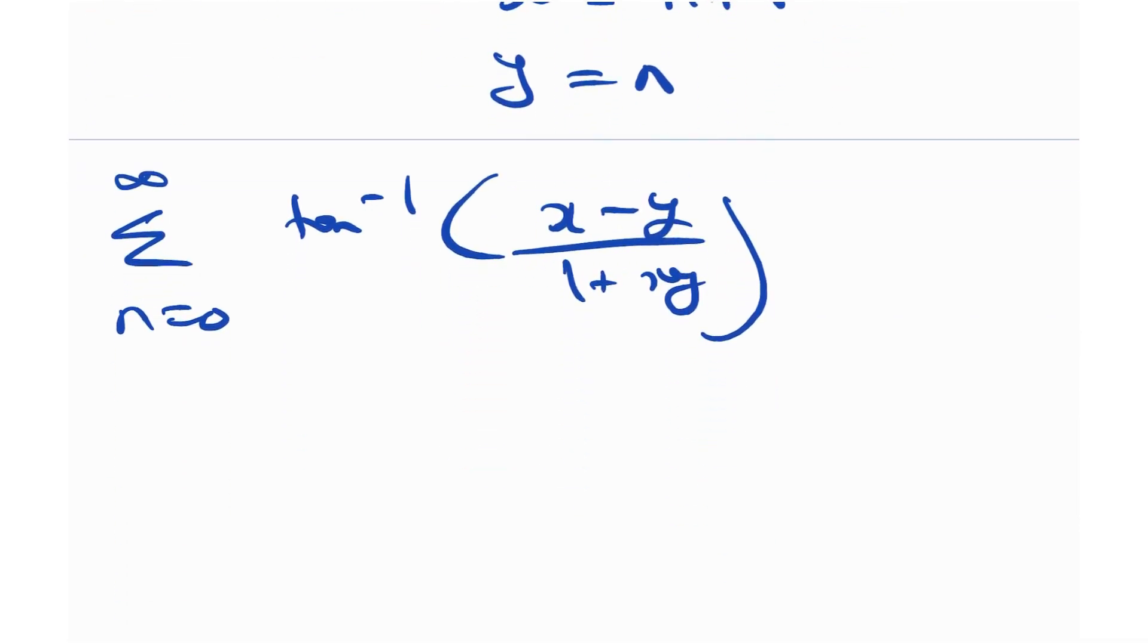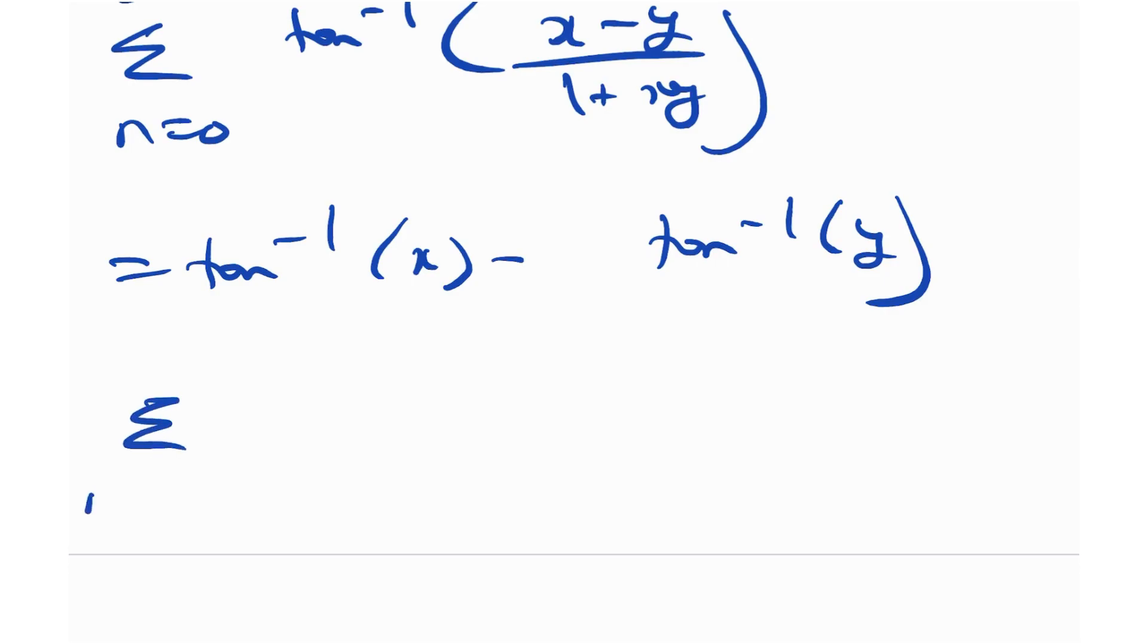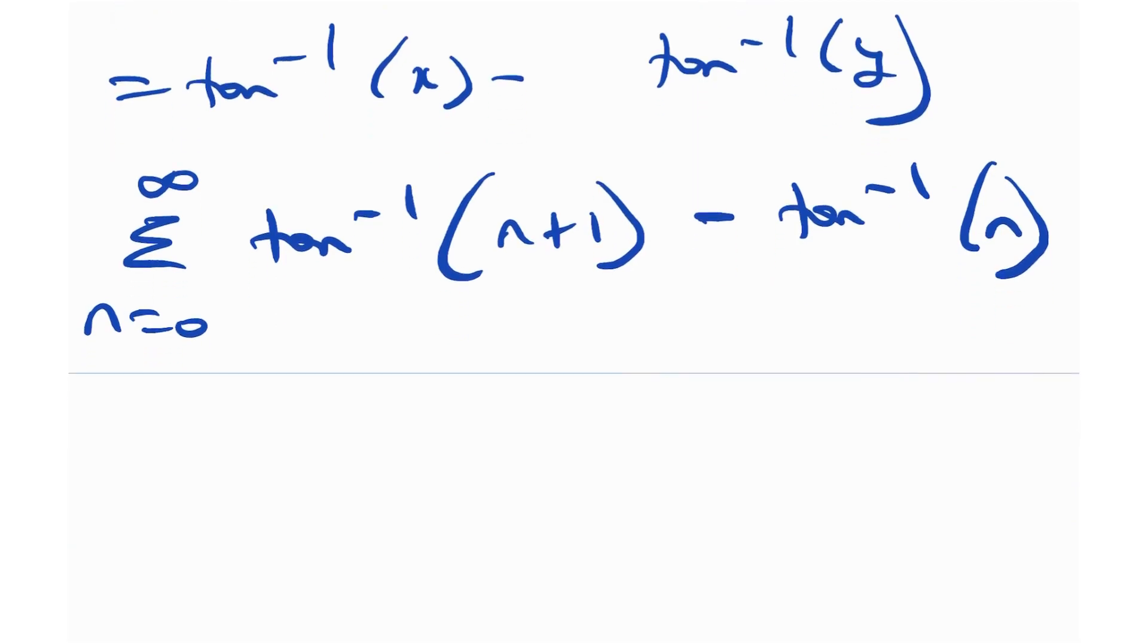But what is this equal to? This is equal to tangent inverse x minus tangent inverse y. Or in our case, this would be equal to the summation from n is equal to 0 to infinity of tangent inverse n plus 1, minus tangent inverse n. So this is essentially the sum that we need to telescope. Tangent inverse n plus 1 minus tan inverse n. As simple as that. And this is pretty standard to deal with.